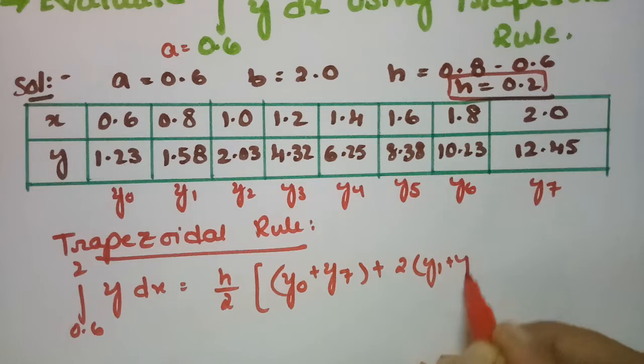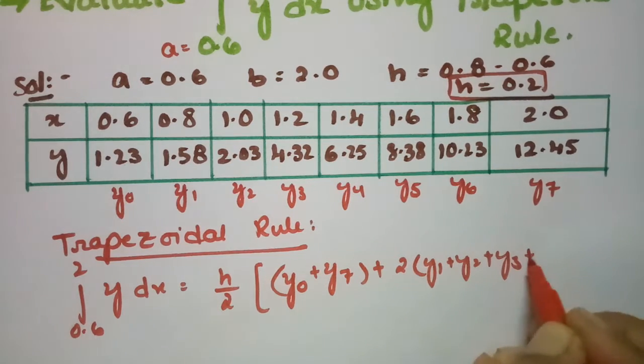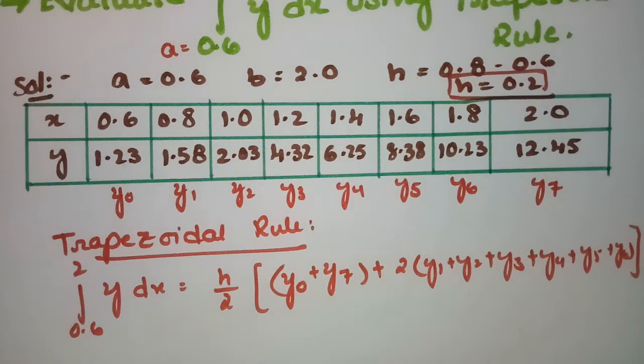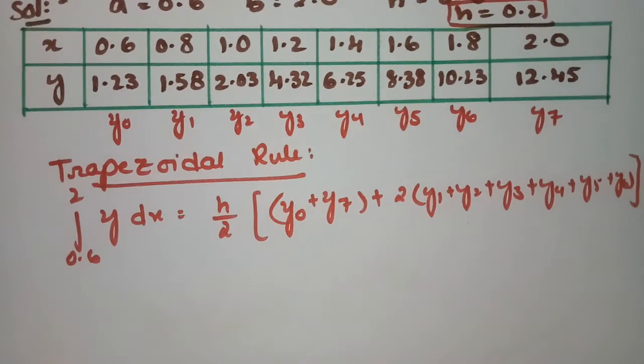That is y1, y2, y3, y4, y5, and y6. We have to add all these values.